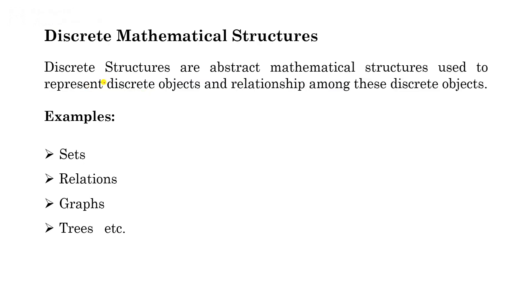Now, discrete mathematical structures. Whenever we talk about a structure, structure means it is made of certain things. For example, if you talk about a building, the building is itself a structure formed of bricks, and bricks are countable.